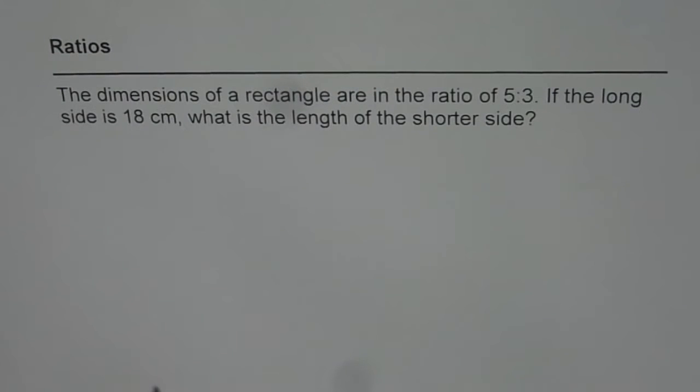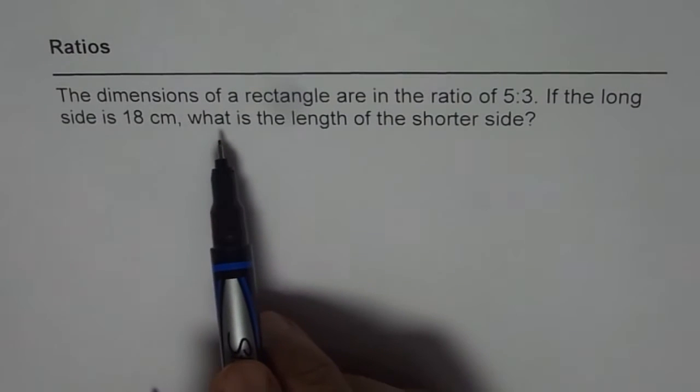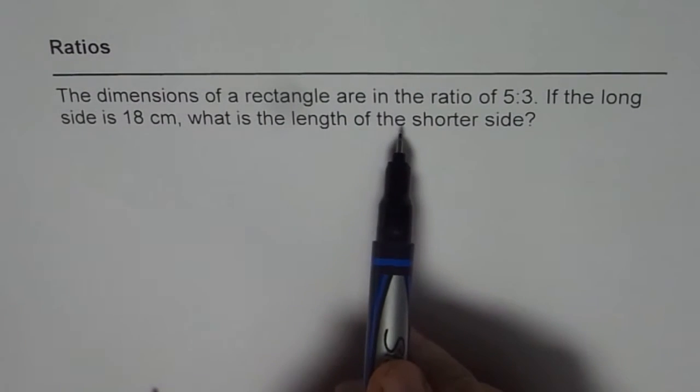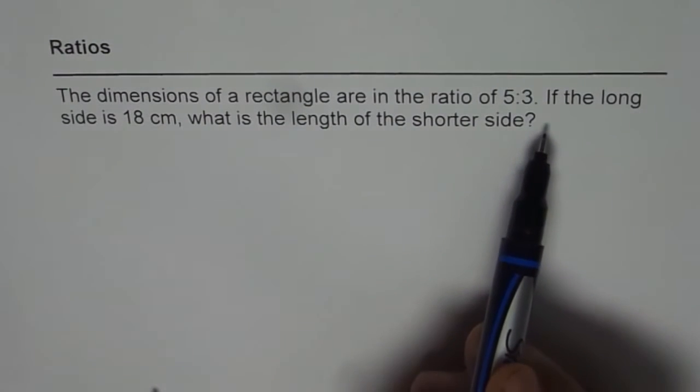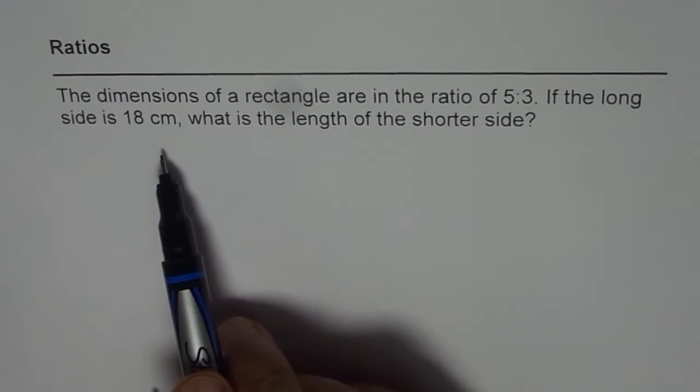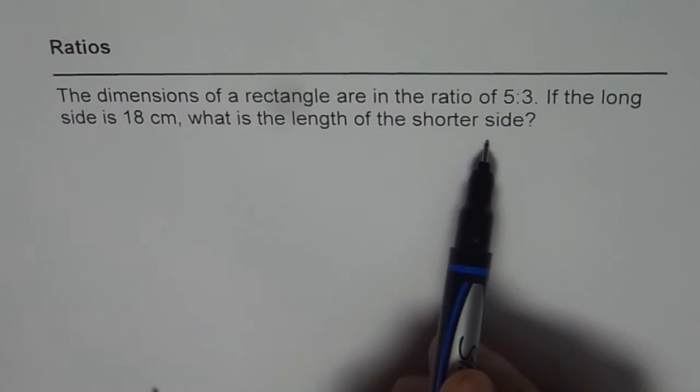I'm Anil Kumar and here is an interesting question on ratios. The dimensions of a rectangle are in the ratio of 5 is to 3. If the long side is 18 cm, what is the length of the shorter side?